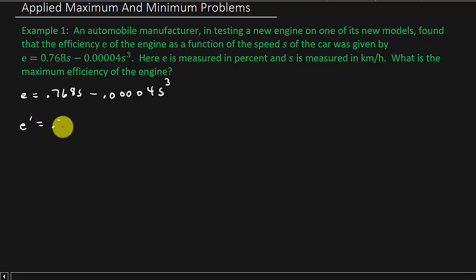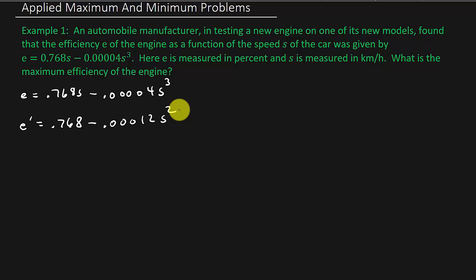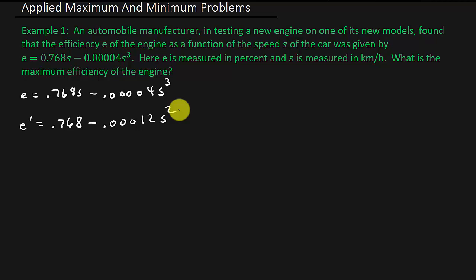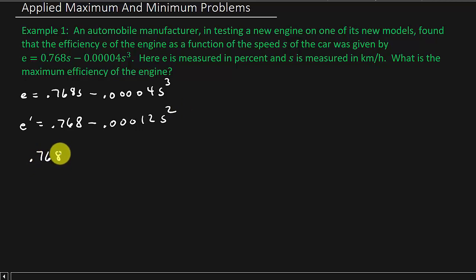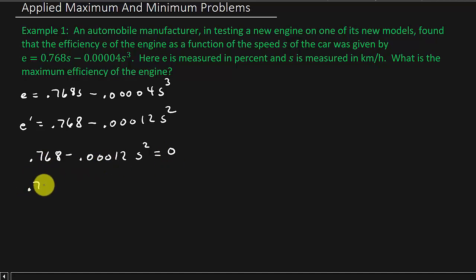We take the derivative: that's going to be 0.768 minus 0.00012S squared. Just the power rule — it was simple to take the derivative on this one. Most of the equations you set up for these optimization problems, the derivative is pretty basic. You could run into something difficult, but more than likely not. So now let's set the derivative equal to 0. We can move the 0.768 over: 0.768 equals 0.00012S squared.